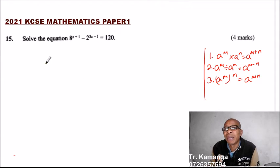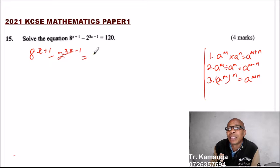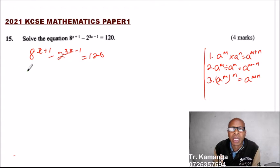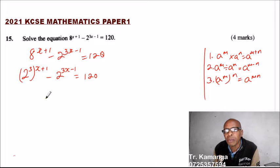Coming back to the question, we can rewrite our equation. We express 8 in terms of 2: 8 is the same as 2 cubed, so we have (2³)^(x+1) minus 2^(3x-1) equals 120.